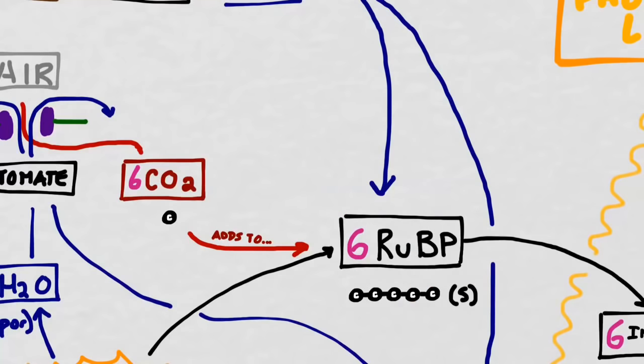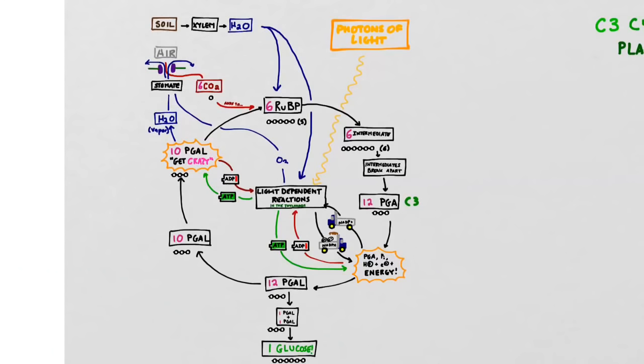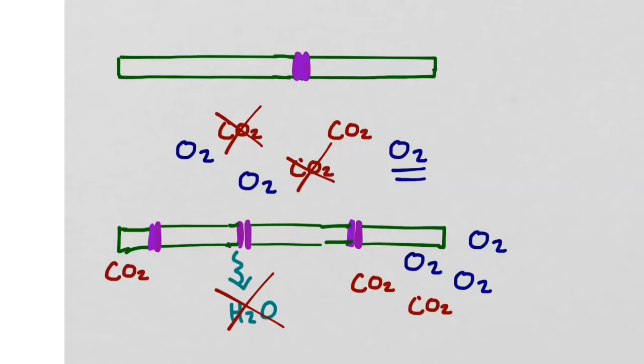But it will also go into an extremely inefficient process called photorespiration if it allows oxygen to bond with rubisco. Remember that rubisco allows carbon dioxide to bond with RUBP. However, RUBP is actually not particularly picky, and if there is oxygen around, RUBP will bond with that instead of with carbon dioxide, which can actually bring the process to a halt. Take a minute to look back through this diagram and see if you can figure out what would happen to the Calvin cycle if you suddenly didn't have any more carbon dioxide.